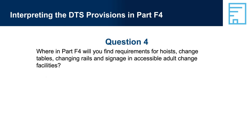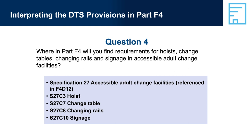Question 4: Where in Part F4 will you find requirements for hoists, change tables, changing rails and signage in accessible adult change facilities? Answer: Specification 27, Accessible Adult Change Facilities, referenced in F4D12 — S27 C3 for hoists, S27 C7 for change tables, S27 C8 for changing rails, and S27 C10 for signage.